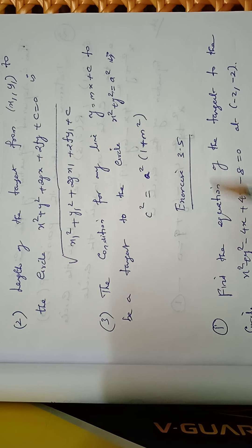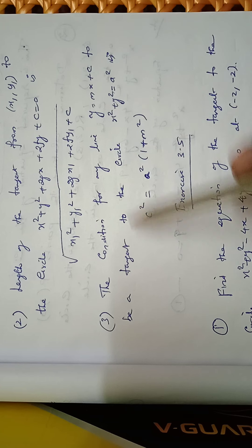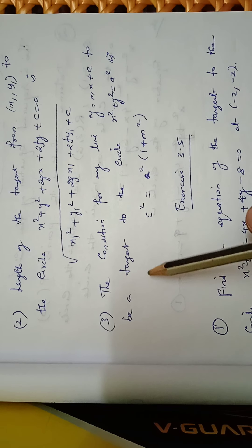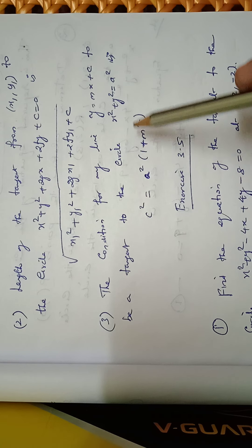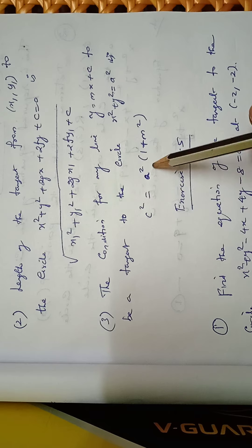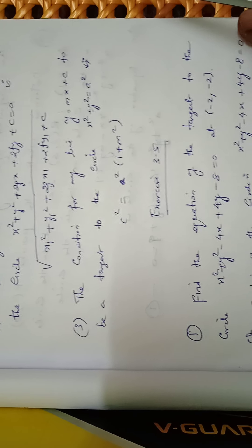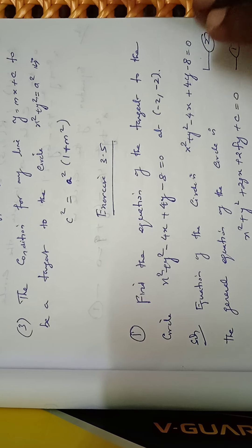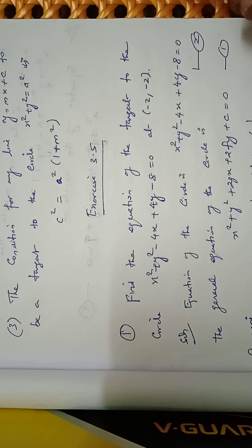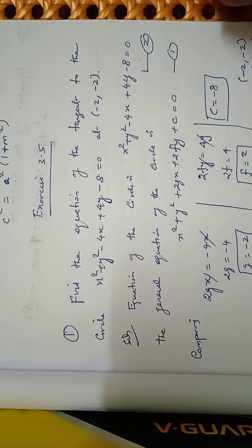Third formula: the condition for the line y = mx + c to be a tangent to the circle x² + y² = a² is c² = a²(1 + m²). Exercise 3.5, sum number 1: find the equation of the tangent to the circle x² + y²